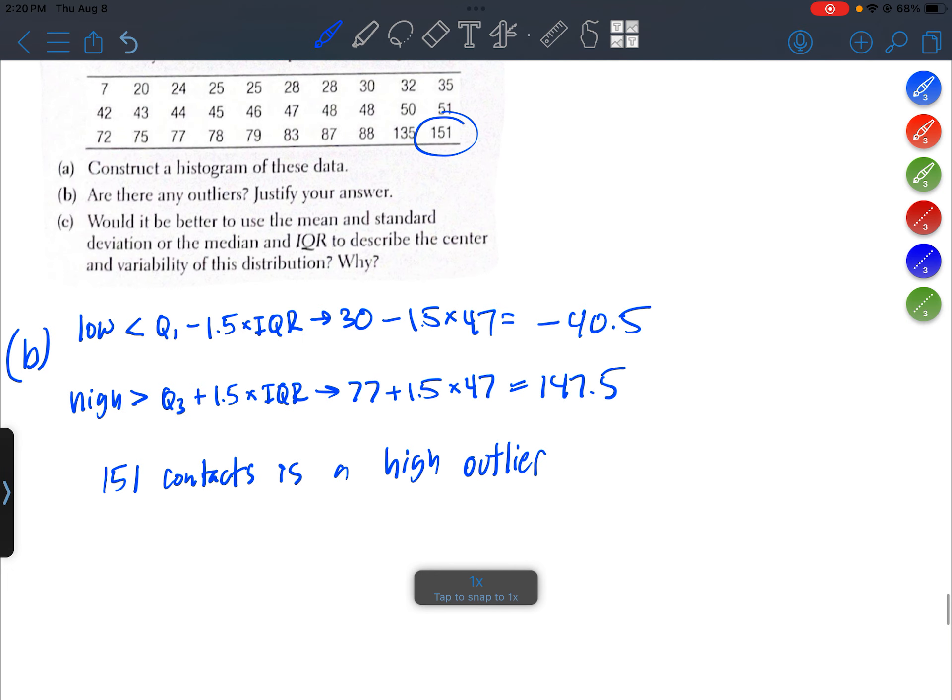Okay, part C: would it be better to use the mean and standard deviation or the median and IQR to describe the center and variability of this distribution?